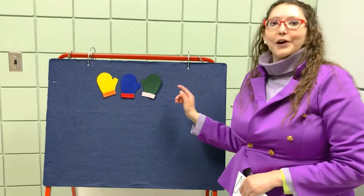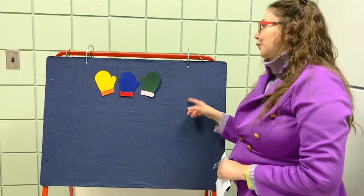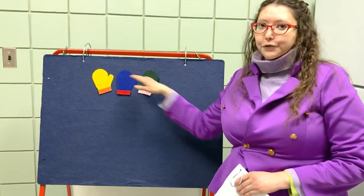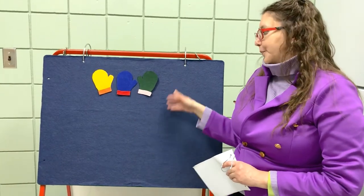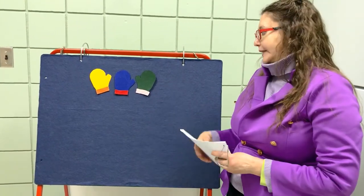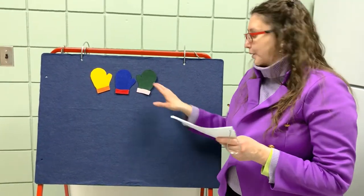So this is an example of a felt board story. Normally I would have more than just three colors up here - there would be red and purple and pink - but I did not have the felt in my cupboard, so we'll just use three for this demo.